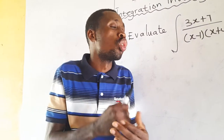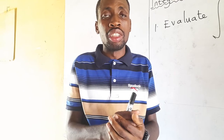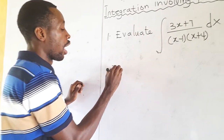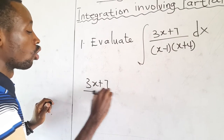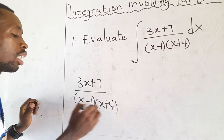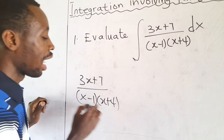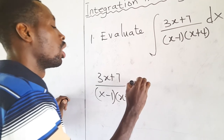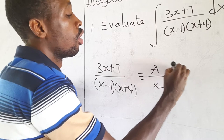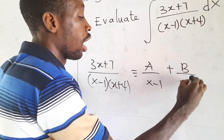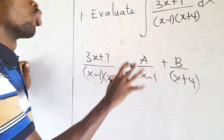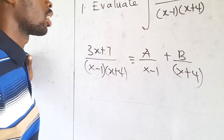If you don't know how to resolve fractions into partial fractions, I encourage you to check out my videos on how to do that. So we have (3x + 7) over (x − 1)(x + 4). Since the two factors are linear, we say this is equivalent to A over (x − 1) plus B over (x + 4). That's the partial fraction. We call this Type 1 of the partial fraction.